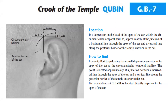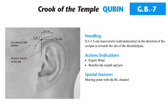GB7 is located in a depression on the level of the apex of the ear within the circumauricular temporal hairline, approximately at the junction of a horizontal line through the apex of the ear and a vertical line along the posterior border of the temple anterior to the ear. To find it, palpate for a small depression anterior to the apex of the ear at the circumauricular temporal hairline. For orientation, TB20 is located directly superior to the apex of the ear. Needling is 0.3 to 1.5 cun transversely or subcutaneously in the direction of the occiput or towards the site of the disorder or pain.